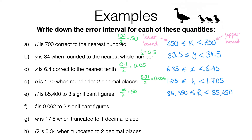For question f, f is 0.062 to two significant figures. Remember with significant figures we don't count any initial zero place value columns. The first significant figure is the 6 in the hundredths column, and rounding to two significant figures means we've rounded to the nearest thousandth, which is 0.001. Halving that gives 0.0005. Subtracting from 0.062 gives the lower bound of 0.0615, and adding gives the upper bound of 0.0625. So the error interval is 0.0615 ≤ f < 0.0625.